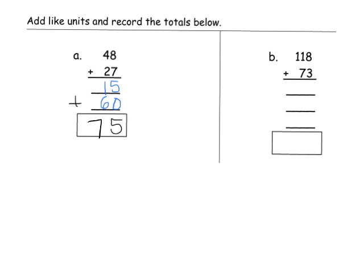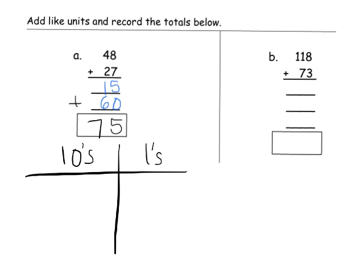Now if we wanted to, we can model this with a place value chart and show students that forty-eight is modeled with four tens and eight ones — counting them out one by one. There's forty-eight.